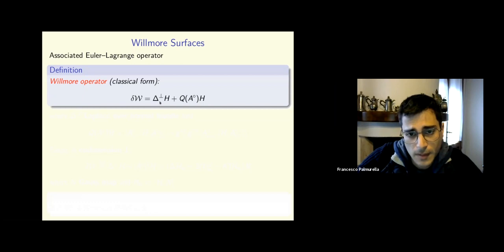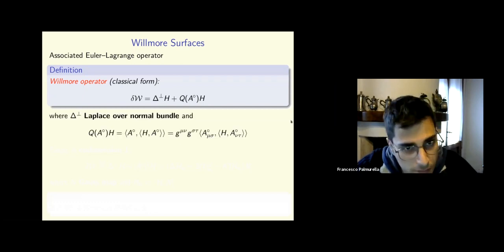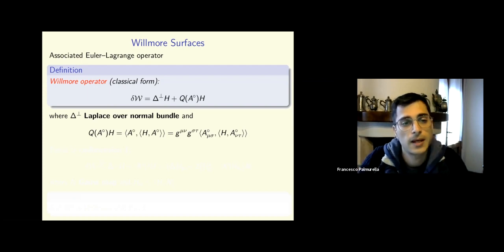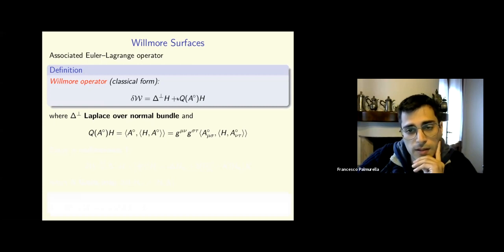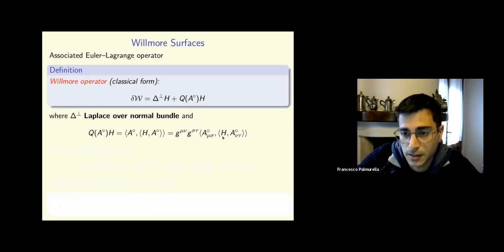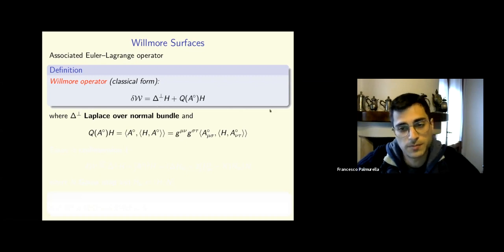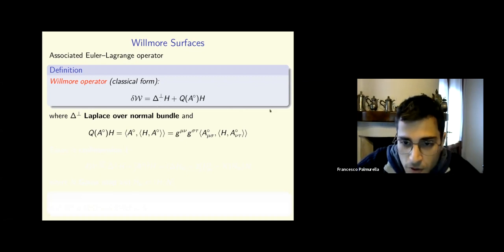In particular, they have the same Euler-Lagrange operator, which is the Willmore operator, written here in classical form. I'm denoting ∇⊥ as the Laplace over the normal bundle of your immersed surface applied to the mean curvature. The second term is a doubly contracted triple product between the trace of the second fundamental form and the mean curvature vector, with G being the induced metric.